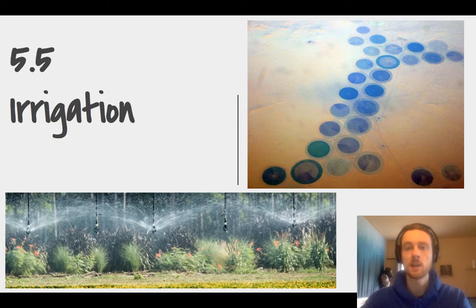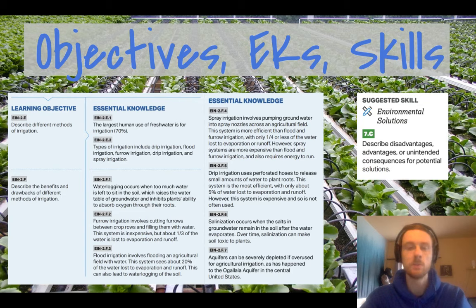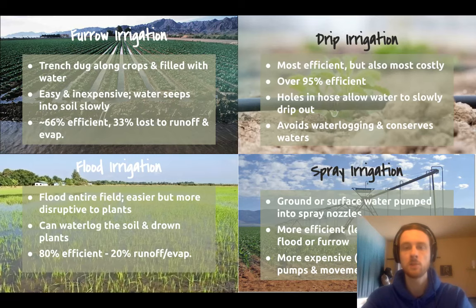Today we'll be focusing on the environmental impacts of overusing water, but also the different methods of irrigating so that water use can be conserved. Our basic overall goal today is to describe different irrigation methods and to describe the benefits and drawbacks of each of those methods. We'll be focusing on four methods of irrigation, and we also need to look at the environmental effects of overwatering. Our suggested science skill for today is describing disadvantages, advantages, or unintended consequences of potential solutions.